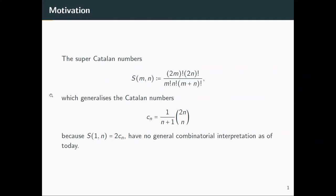The main object of my talk will be the super-Catalan numbers given by this formula. s(m,n) is equal to (2m)! times (2n)! divided by m! n! times (m+n)! for m and n non-negative integers. This number is always an integer and generalizes the usual Catalan numbers C_n precisely when m is equal to 1.